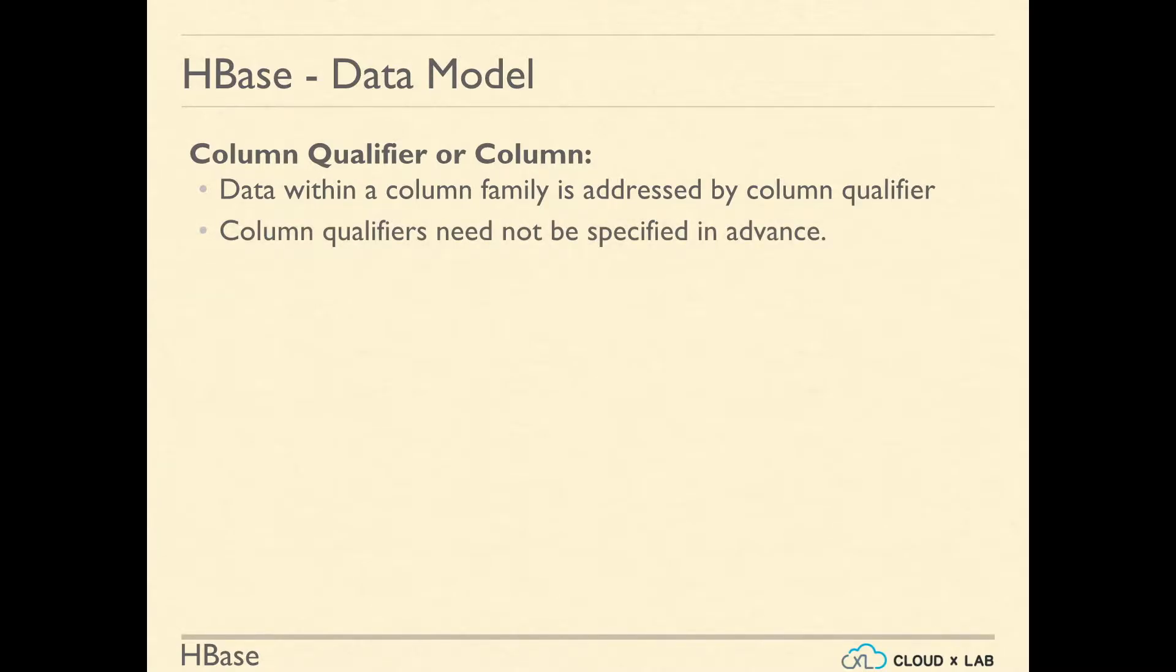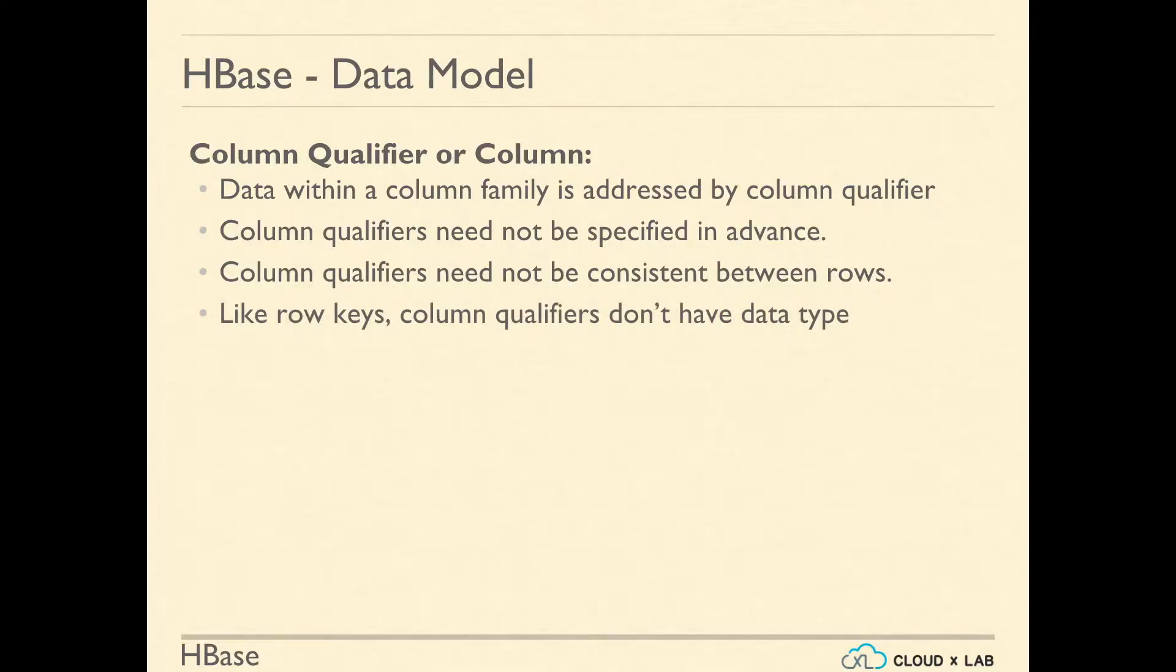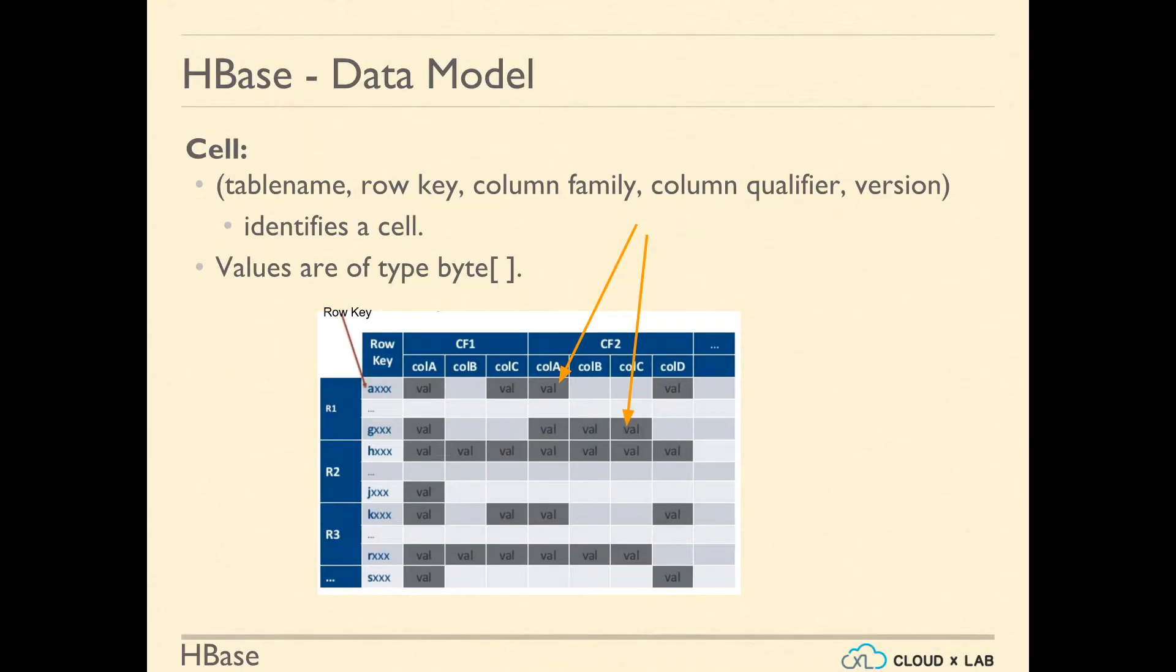Data within a column family is addressed by a column identifier or column qualifier. Column qualifiers need not be specified in advance. Column qualifiers need not be consistent between the rows. And like row keys, column qualifiers don't have to have a data type. They're always treated as byte array. Or in other words, row key and column name can store any kind of binary data.